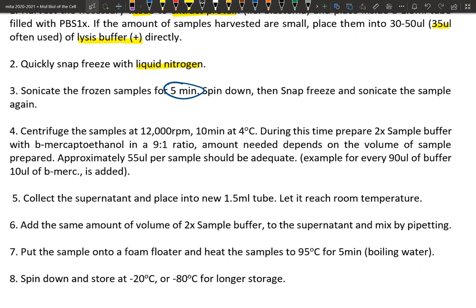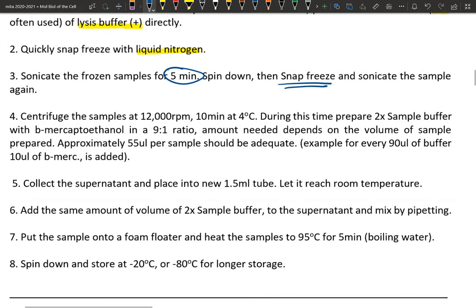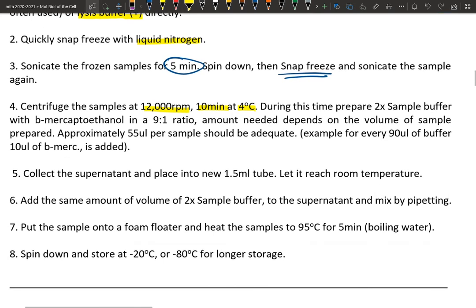After the sonication, you want to centrifuge your samples at 12,000 rpm for 10 minutes at 4°C. During that waiting time of 10 minutes, you can prepare your 2x sample buffer containing beta-mercaptoethanol in a nine-to-one ratio.